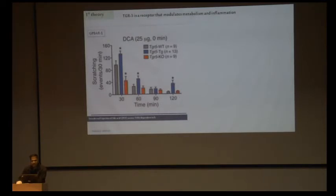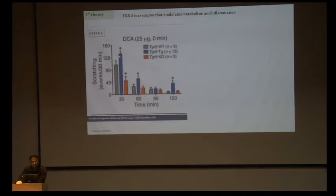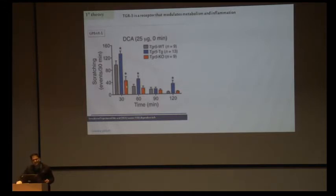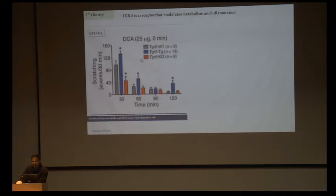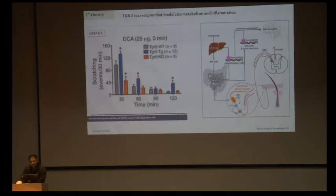The first currently accepted theory is the TGR5 theory. TGR5 is a G-protein-related bile acid receptor. In transgenic mice with extra expression of TGR5 versus knockout mice, intradermal injection of deoxycholic acid increases itching sensation. The sensation is decreased in TGR5 knockout mice compared to wild type. So intradermal injection of bile acid causes TGR5-dependent itching.